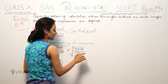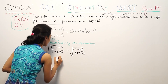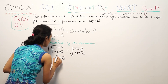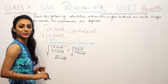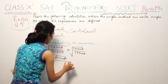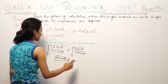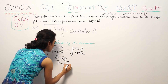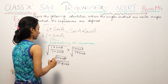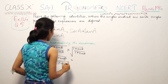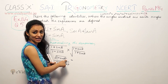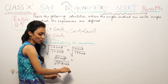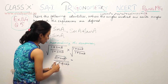So we have (1 plus sin A) under root, squared, and using the identity (a minus b)(a plus b) equals a squared minus b squared, the denominator becomes (a squared minus b squared) under root, which simplifies individually for each squared term.